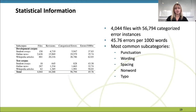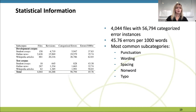The corpus consists of 4,044 files with 56,794 categorized error instances. There are 45.76 errors per 1,000 words in the corpus overall, but that number fluctuates across text sources as shown in the rightmost column. The corpus is split into a development corpus and a test corpus to guide the development of the spell and grammar checker. The table also shows the five most common subcategories.